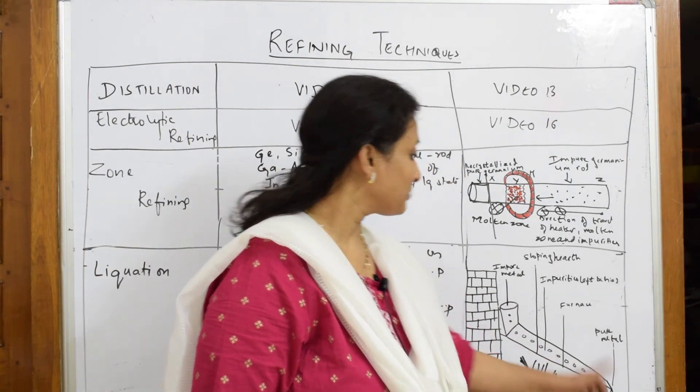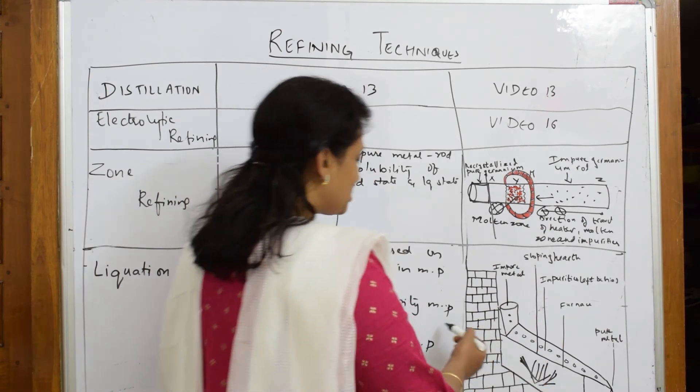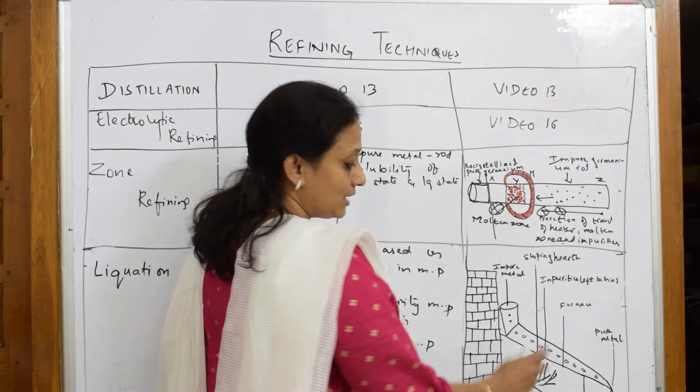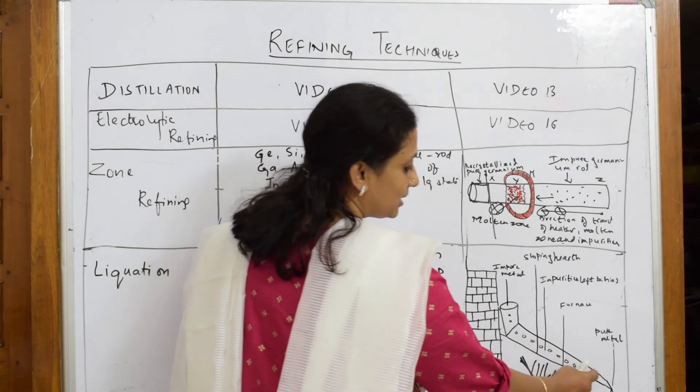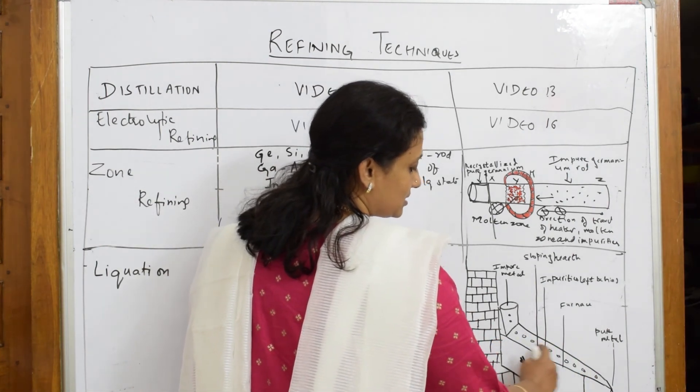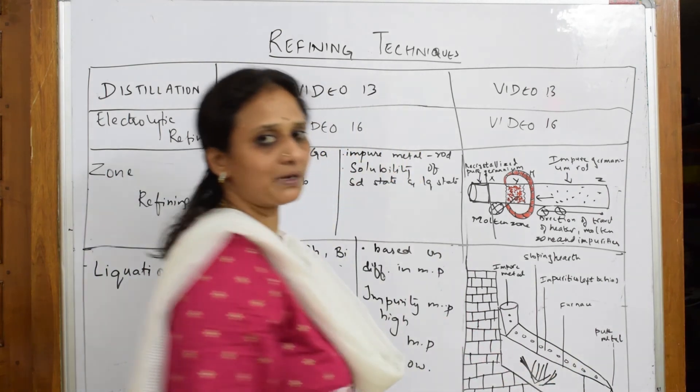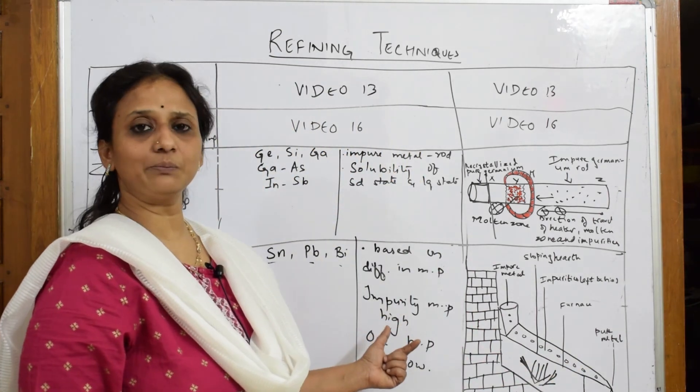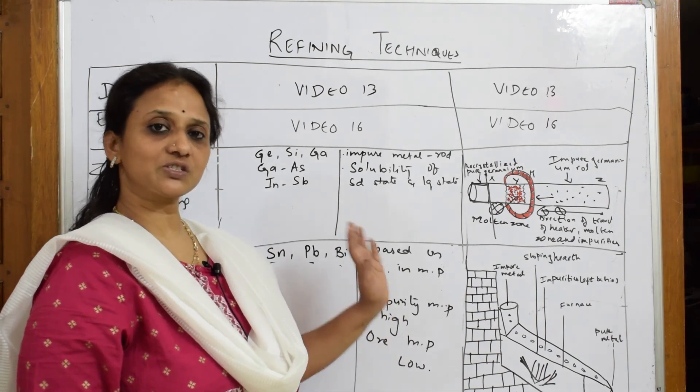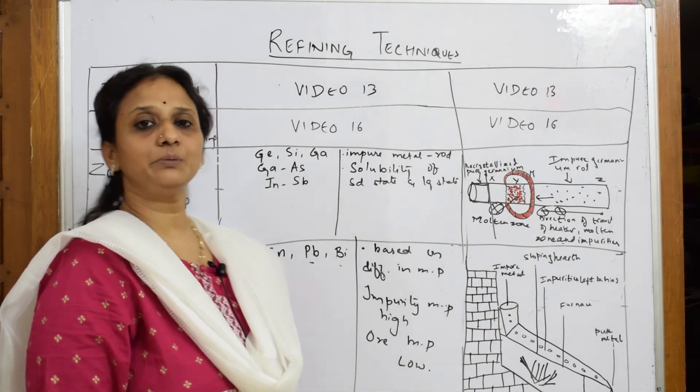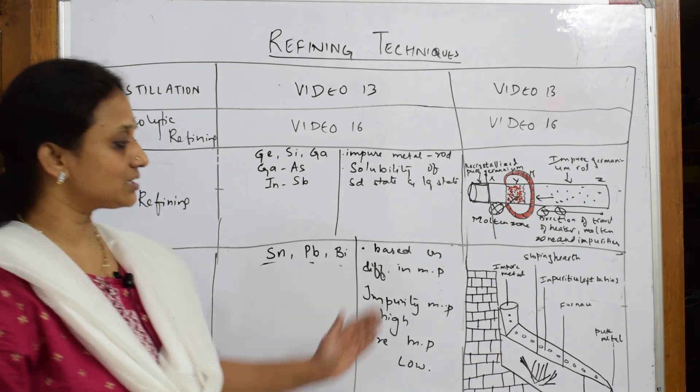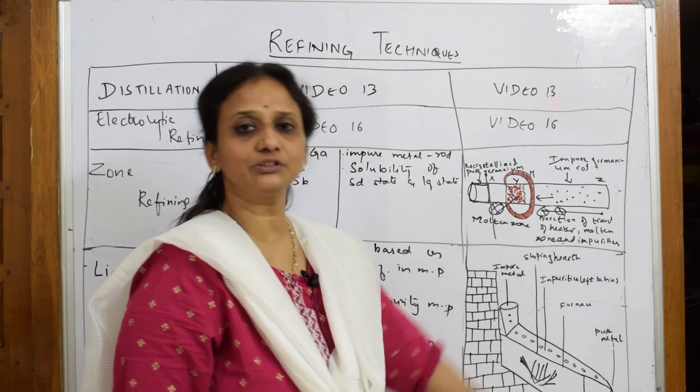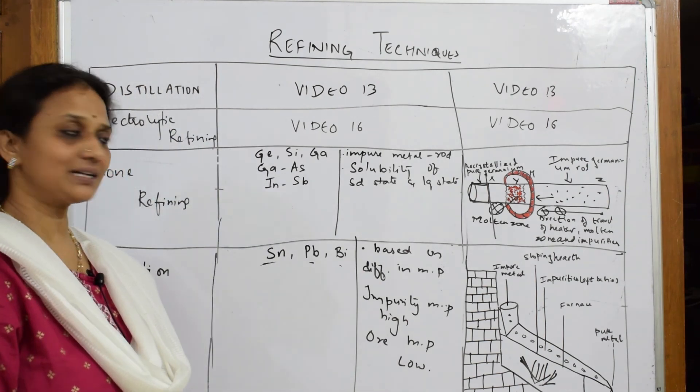The leftover impurities have very high melting point. Once we collect the metal, the leftover impurities are present at this particular part which can be discarded. Simple logic: melting point difference. First the ore is collected, then the impurity. They use a sloping hearth so it's easy for the metal to flow.